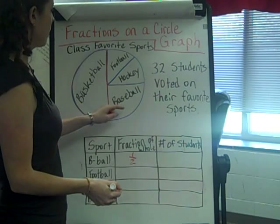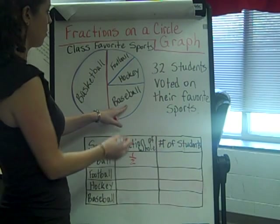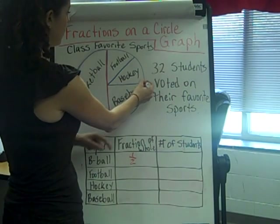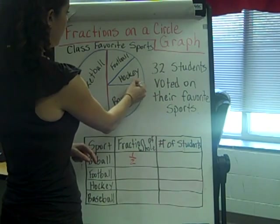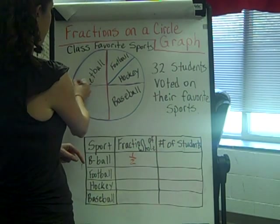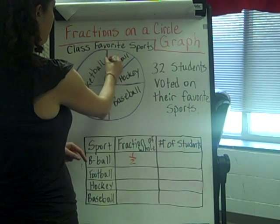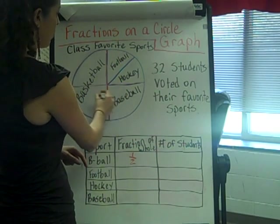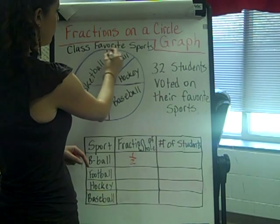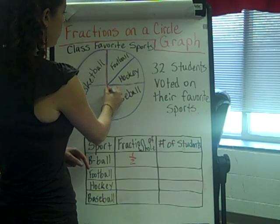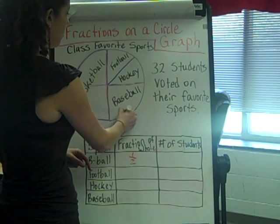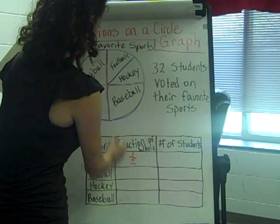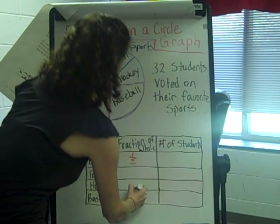Next, I can look at baseball — that's the next biggest. I can see if I continue this line across to have equal sections, it's now broken into fourths, and baseball is one fourth out of those sections.